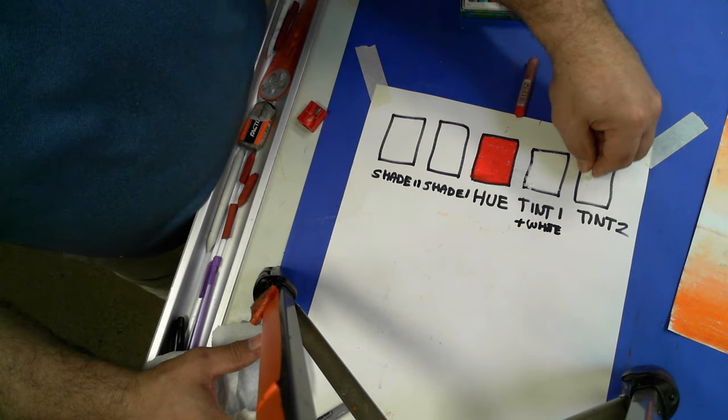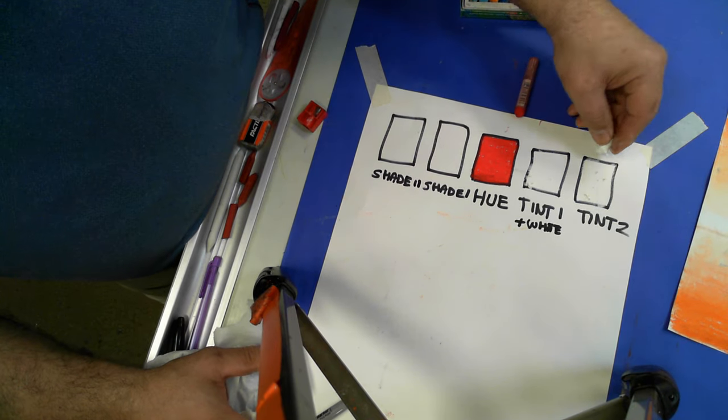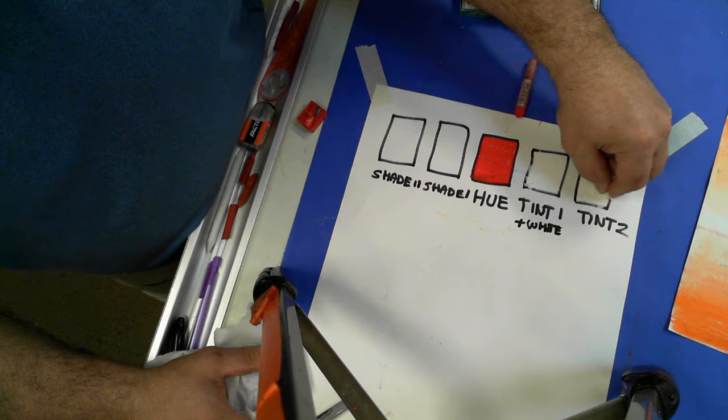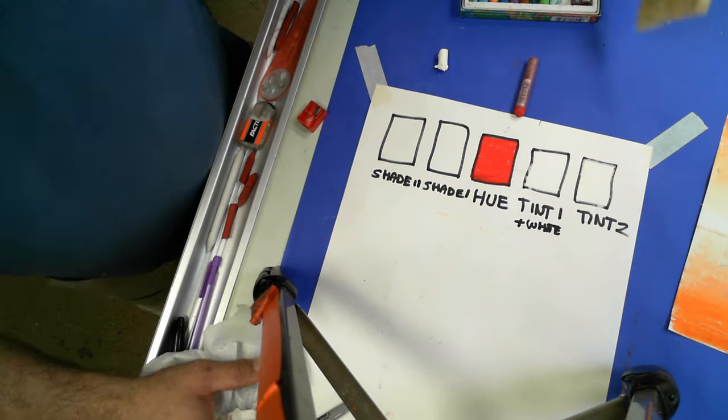Then I'm going to go over to tint two, and I'm going to do the same thing. So I'm going to go vertical. Then I'm going to crosshatch it with horizontal. I can take my brush and brush off the Nurgles.